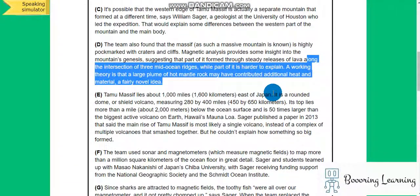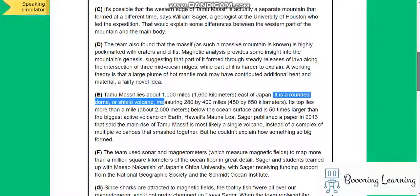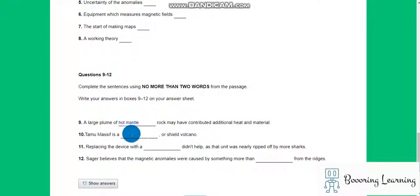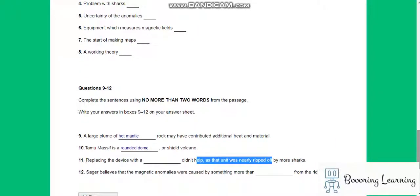It is a rounded dome or shield volcano. It is a rounded dome or shield volcano, divided with a. Didn't help that unit was nearly ripped off. It is G, replacing our keyword to search.